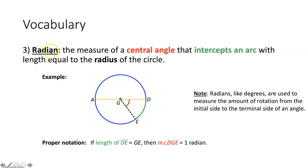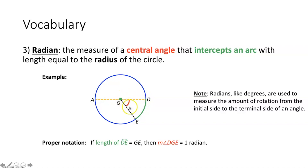Next vocabulary term is a radian. That would be the measure of a central angle that intercepts an arc with length equal to the radius of the circle. This is saying that the measure of a central angle is going to be equal to one radian if the length of the intercepted arc is equal to the length of the radius of the circle. So the measure of central angle D, G, E would equal one radian if the length of this intercepted arc, arc D, E, was equal to the length of the radius, the measure of segment G, E.